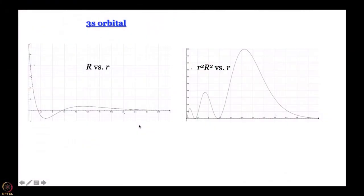We are discussing hydrogen atom wave functions. We have shown you some beautiful pictures and we have learnt how to depict s orbitals: 1s, 2s, 3s. We have learnt how nodes come, and we have also learnt what happens when we multiply by r² and generate the radial probability distribution function.